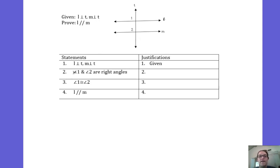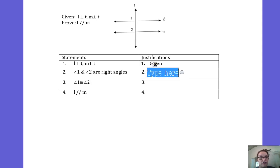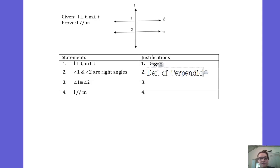So in step 2, angle 1 and angle 2 are right angles. The reason we know those are both right angles is because we were told in the given that the lines were perpendicular. The justification for this step — why are those two angles right angles? They're right angles because that's the definition of perpendicular lines.